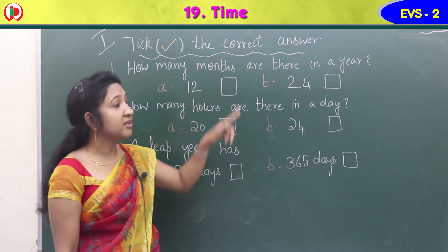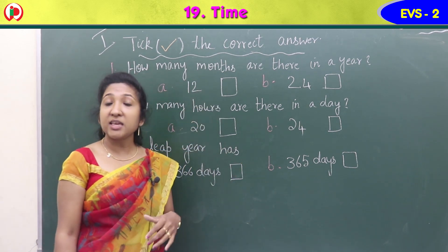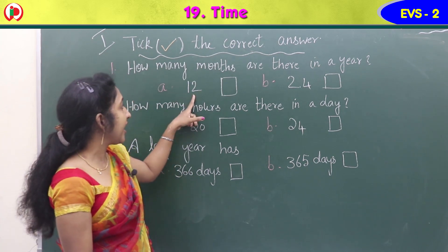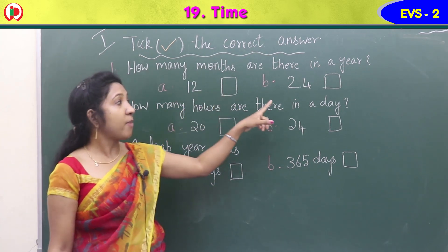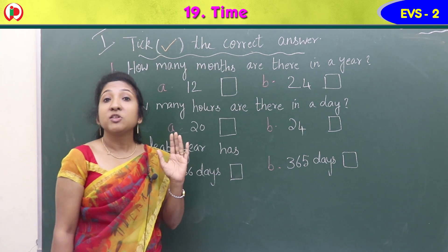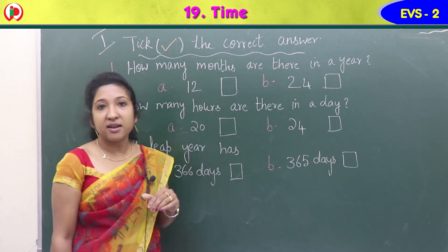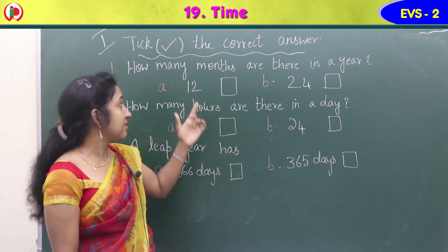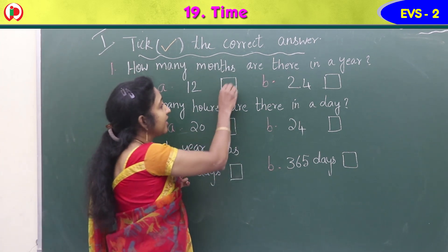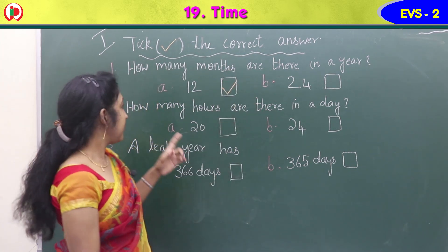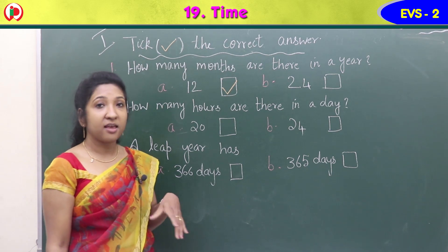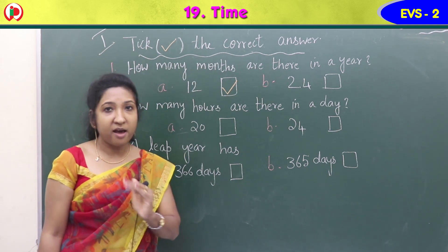The first question: how many months are there in a year? Option A is 12, option B is 24. We have 12 months in a year, so option A is the correct answer. Give a tick there.